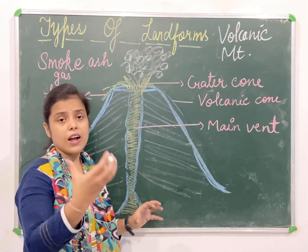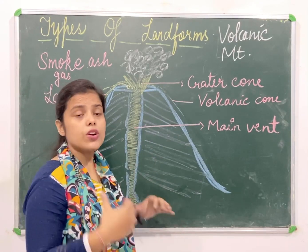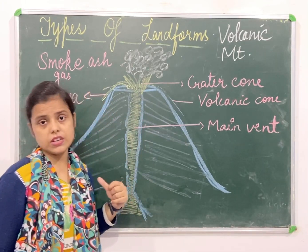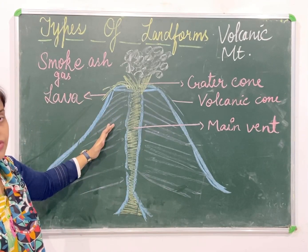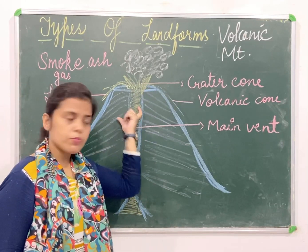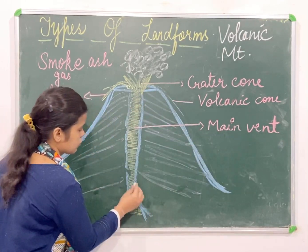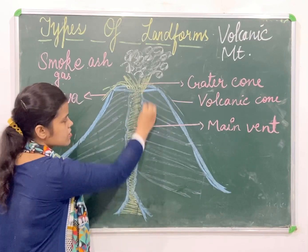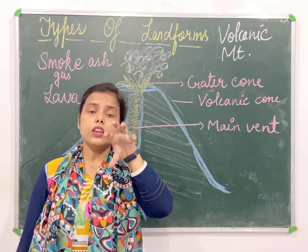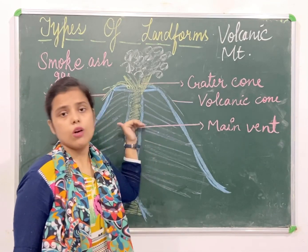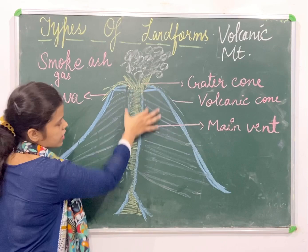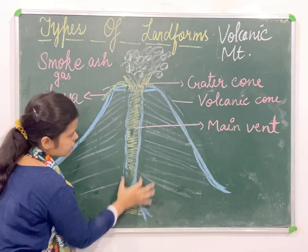This hot magma, this lava — how does it come out from the interior of the earth? It comes out from the main vent. This middle structure from where the magma, the hot lava comes out, is known as the vent. This upper part is the main vent.